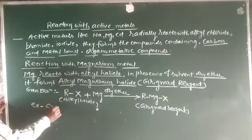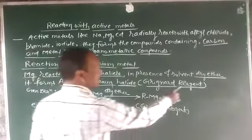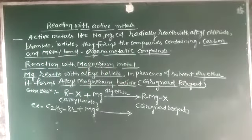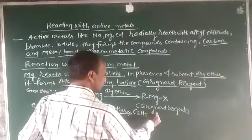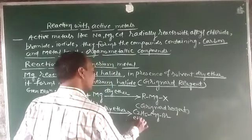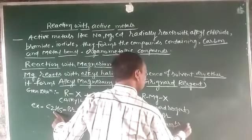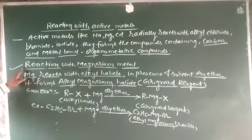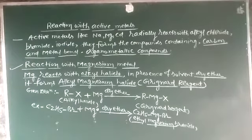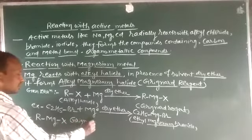For example, ethyl bromide (C₂H₅Br) treated with magnesium in the presence of dry ether forms C₂H₅MgBr — ethyl magnesium bromide. This is the Grignard reagent, denoted by RMgX.